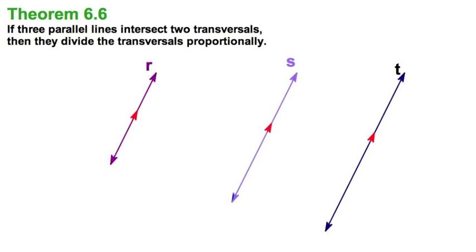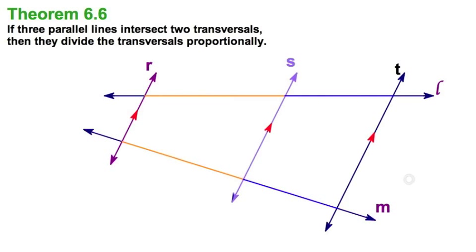Well, let's start here with three parallel lines, R, S, and T, and pass one transversal, L, and a second transversal, M, through them.